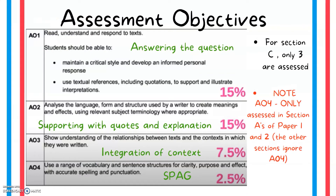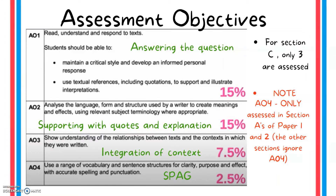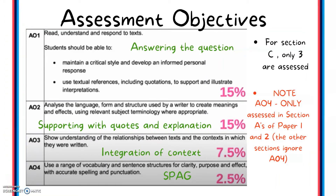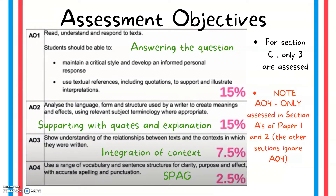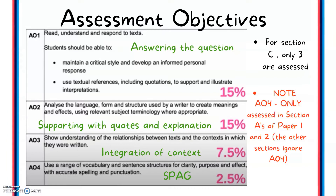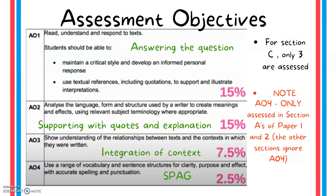There are four assessment objectives. For Section C, only AO1, AO2, and AO3 are assessed. AO4 is the SPAG — it is only assessed in Section A of Paper 1 and Section A of Paper 2. So you only need to worry about AO1, which is answering the question; AO2, which is supporting the answer with quotes and explanation; and AO3, which is integration of context.